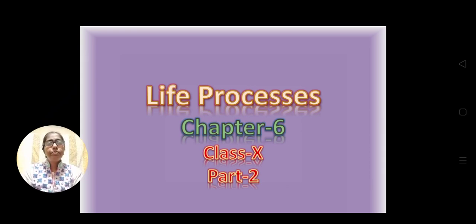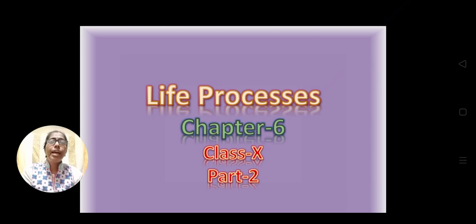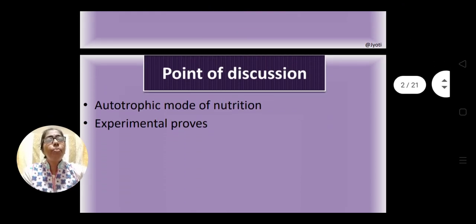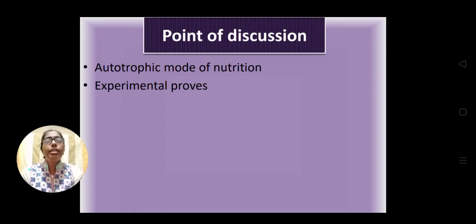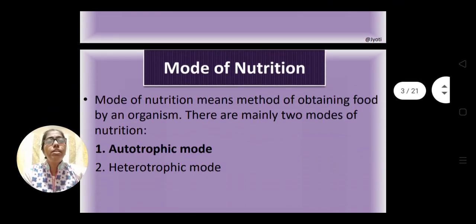Hello students, this is Part 2 of Life Processes, Chapter 6 of Class 10. In Part 1 we already discussed what life processes are, what the major criterion is for deciding whether something is living or non-living, and we discussed the life process of nutrition, with hints about autotrophic and heterotrophic modes. In Part 2 we will discuss autotrophic nutrition in detail along with experimental proofs related to photosynthesis in plants.